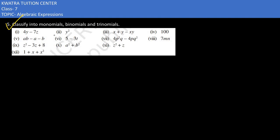Now in this question we need to classify them into monomial, binomial, and trinomial. What is a monomial? Having only one term. A binomial is having only two terms. Then a trinomial would be having three terms in total. So in the first situation, how many terms do we have?